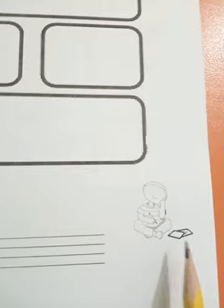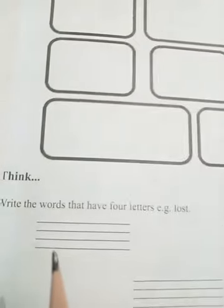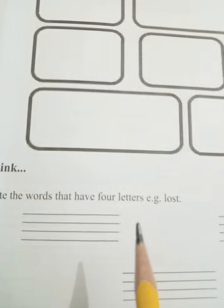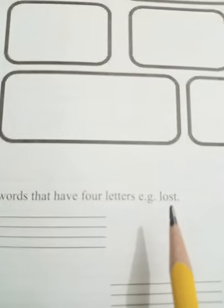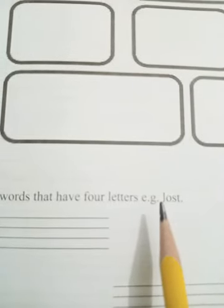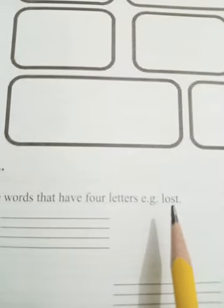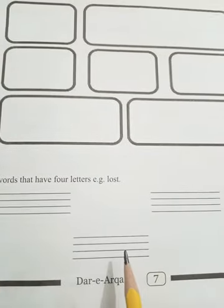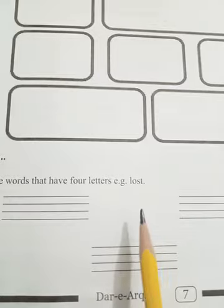After writing the difficult words, you will learn their spellings. Now come to the next question — Think. You have to use your brain. Write the words that have four letters. For example, 'lost' — L-O-S-T. Count how many letters it has: one, two, three, four. It has four letters.